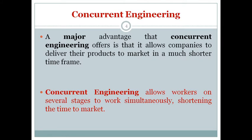A major advantage concurrent engineering offers is that it allows companies to deliver products to market in a much shorter time frame. In previous discussions about lead time — the minimum time by which products are ready after an order is placed — that lead time is reduced so the final product is available at the earliest. Concurrent engineering allows workers on several stages to work simultaneously, shortening the time to market.